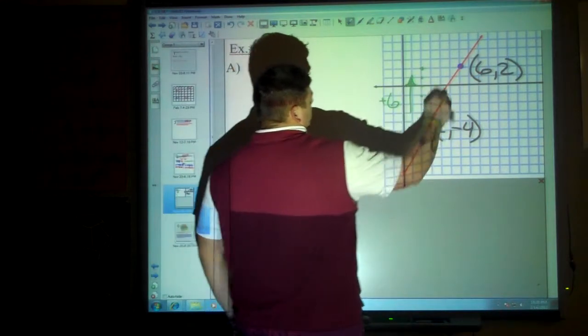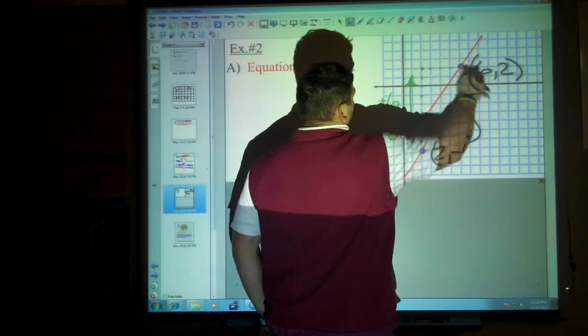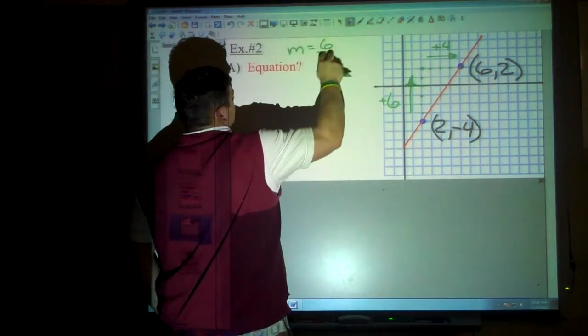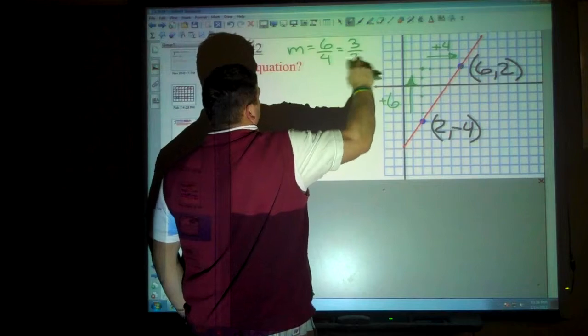So it goes up 6. And then it goes to the right 1, 2, 3, 4. So that's 4. You could say the slope is 6 over 4, which is the same as 3 over 2.